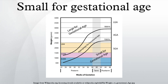Small for gestational age (SGA) refers to embryos or fetuses that are smaller in size than normal for the gestational age, most commonly defined as a weight below the 10th percentile for the gestational age.